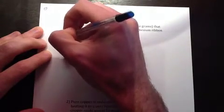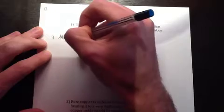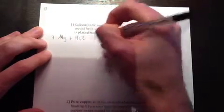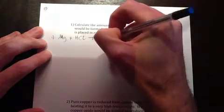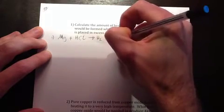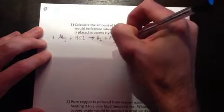So we've got magnesium, which is just Mg, reacting with hydrochloric acid, and that's going to form hydrogen gas, which is H2, plus magnesium chloride, MgCl2.